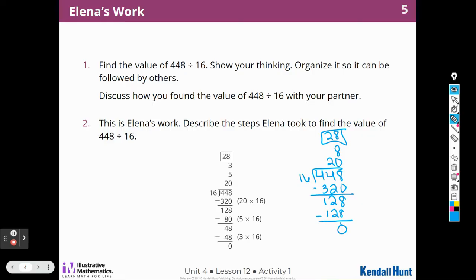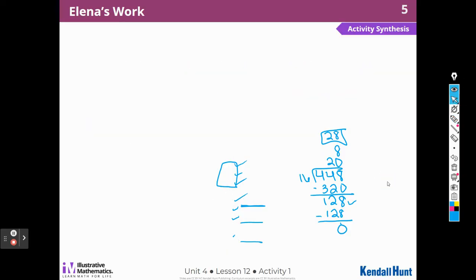This is Elena's work. Describe the steps Elena took to find the value of 448 divided by 16. So again, she started with 20 and she got the same answer I did, didn't she? She said 20 times 16 is 320. And she even wrote the multiplication out to the side. And then she was also left with 128. But then she decided to do 5 times 16 is 80. And she subtracted and she was left with 48. So then she decided to do 3 times 16 is 48. And then when she added all of those things up, she got 28 just like I did.